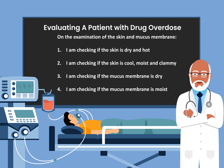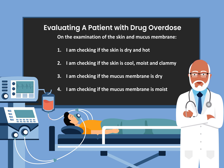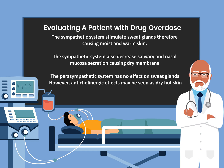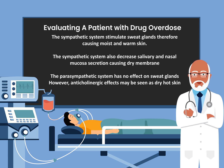On the examination of the skin and mucous membrane, I am checking: number one, if the skin is dry and hot; number two, if the skin is cool, moist, and clammy; number three, if the mucous membrane is dry; and number four, if the mucous membrane is moist. The sympathetic system stimulates sweat glands, causing moist and warm skin, and also decreases salivary and nasal mucous secretion, causing dry membrane. The parasympathetic system has no effect on sweat glands; however, anticholinergic effects may be seen as dry, hot skin.